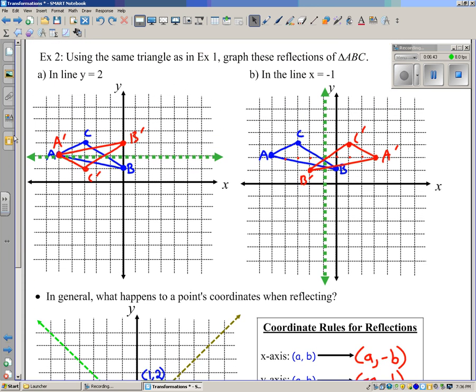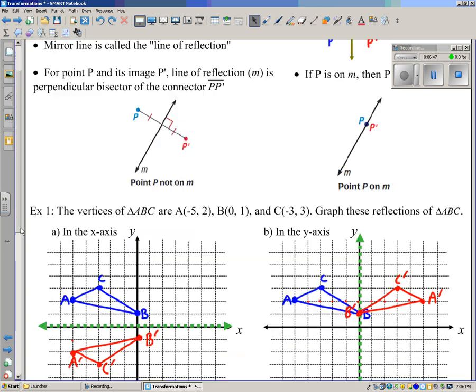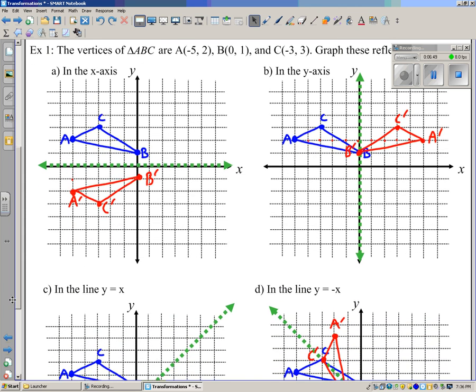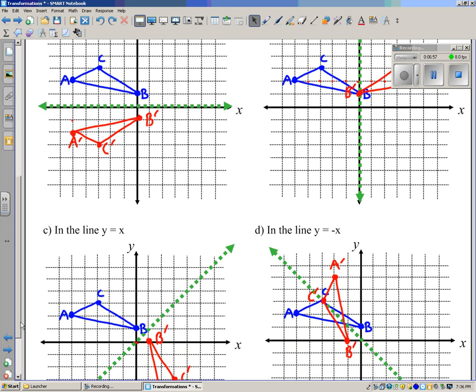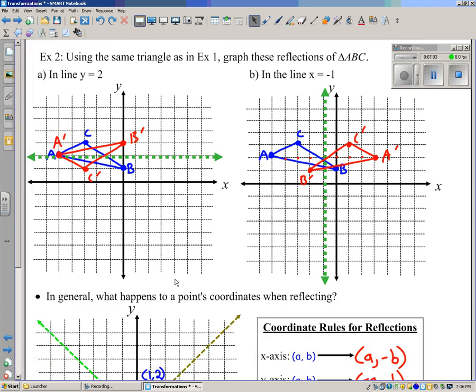Personally, I just tend to count like the way I've shown it. But what I need you to take away from today is that there's all these different lines of reflections. The most common ones are the x-axis, the y-axis, y equals x, and y equals negative x. And how to reflect across them. But also be prepared to use other lines of reflections besides those.